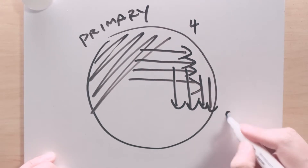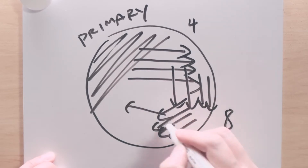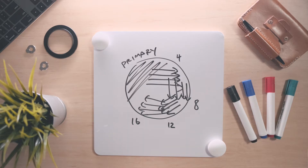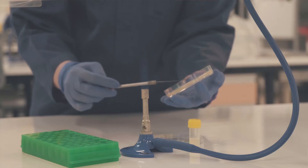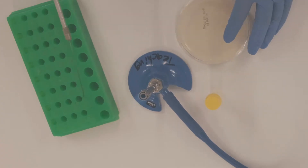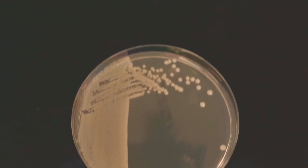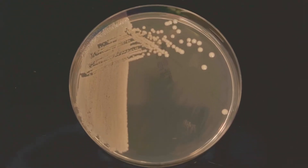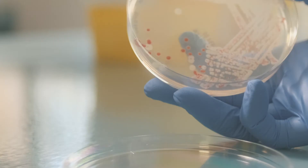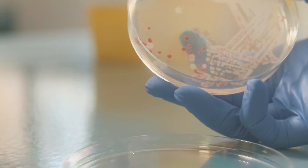Flame the loop again and this process is repeated for four sets of four streaks — a total of 16 streaks. Remember to work close to the Bunsen burner and flame the loop between each set of streaks. Here we see what the results look like after a period of incubation. Notice that individual colonies are visible towards the last few sets of streaks. In patient samples, we often find more than one type of bacteria at the site of infection.